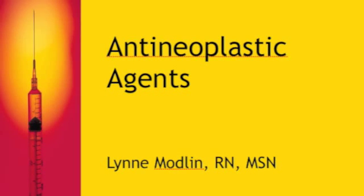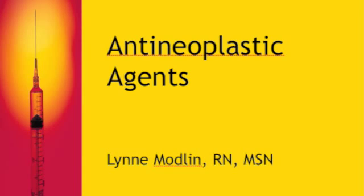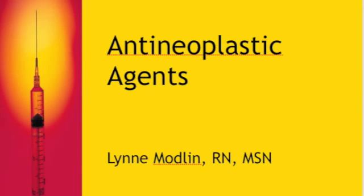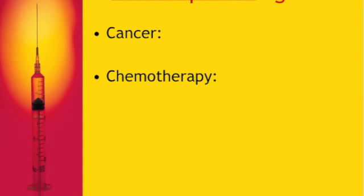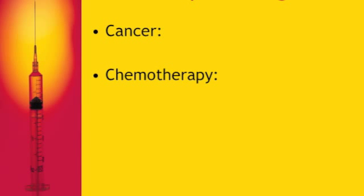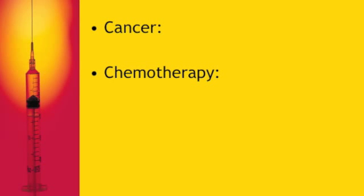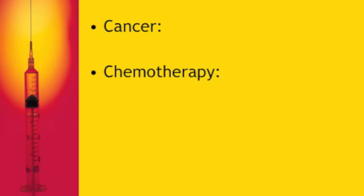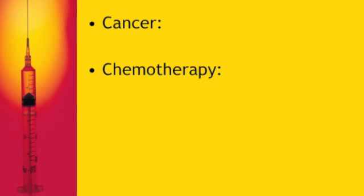Today we're going to talk about anti-neoplastic agents, which mainly encompasses our chemotherapy drugs, and we may include at the end the adjuvant therapy medications given with chemotherapy. Cancer is a group of diseases in which abnormal cells grow out of control and can spread to other areas of the body. We use chemotherapy to kill cancer cells, most effectively destroying rapidly dividing cells. However, some chemotherapy drugs kill cancer cells plus normal cells. Our role as nurses is to administer chemotherapy and know the contraindications, interactions, therapeutic effects, side effects, and adverse reactions.